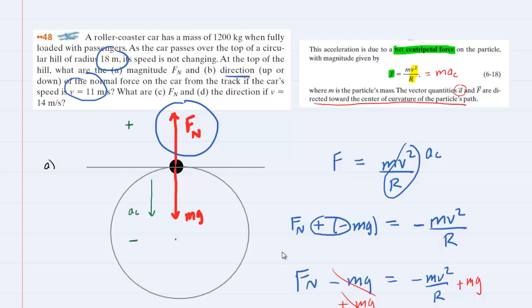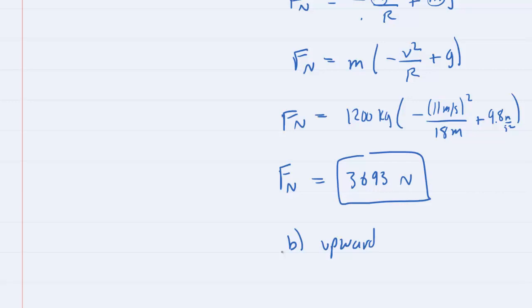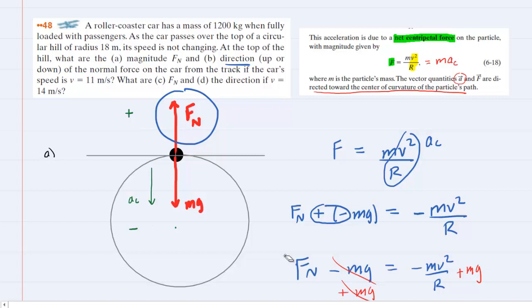And the direction, whether it's up or down, will be upward, as indicated in our free body diagram. And so the correct answer for part B would be upward. So we can move on to parts C and D.